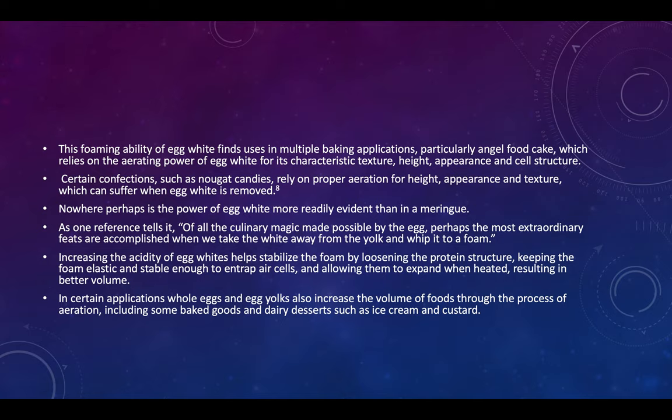Perhaps nowhere is the power of egg white more readily evident than in meringue. As one reference notes, of all the culinary magic made possible by eggs, perhaps the most extraordinary feats are accomplished when we take the white away from the yolk and whip it to a foam. Increasing the acidity of egg white helps to stabilize the foam by loosening the protein structure, keeping the foam elastic and stable enough to entrap air cells and allowing them to expand when heated, resulting in better volume.